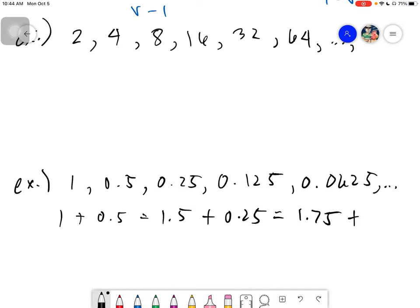Plus 0.125. The answer is 1.875. Plus 0.0625. The answer is 1.9375. So you will notice it's going to increase but it gets closer and closer to 1.9.